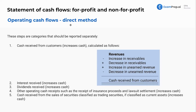Basically, the direct method is just any journal entries that have cash in them — we're going to net them together. That's all it is. It's pretty simple at its core. The indirect method is a little different because we'll start with net income and back our way to find our cash balance. All of these items here, feel free to read through them.